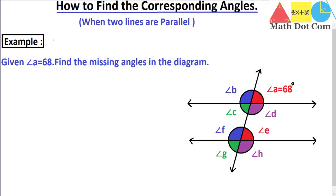There are some important things to keep in mind. We discussed in the previous lecture that corresponding angles are angles that occupy the same relative position at different intersections. From this diagram, it is clear that angle A and angle E are at the same relative position, and the lines are also parallel. When the lines are parallel, corresponding angles are congruent, so angle A equals angle E. If angle A is 68 degrees, then angle E is also 68 degrees — no computation needed.